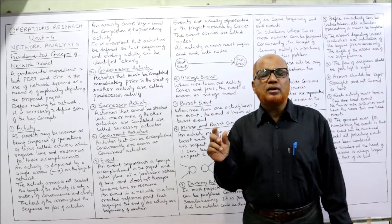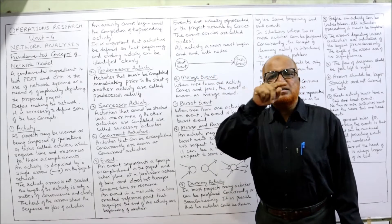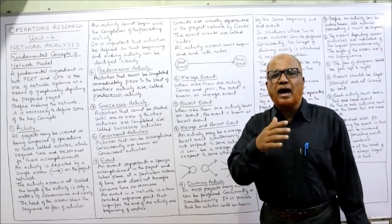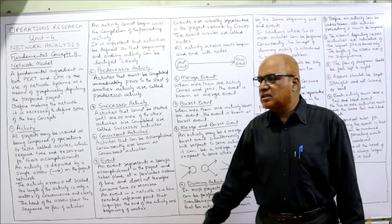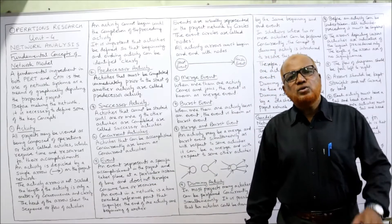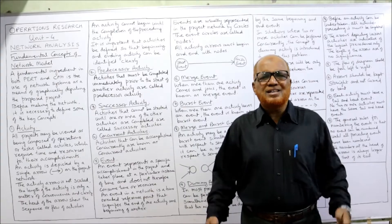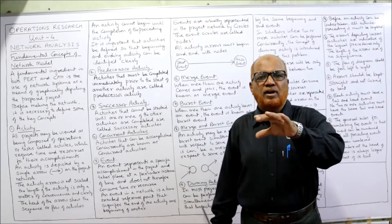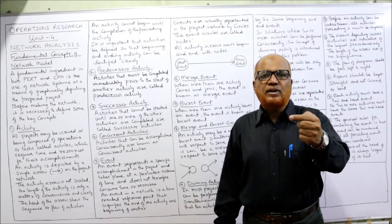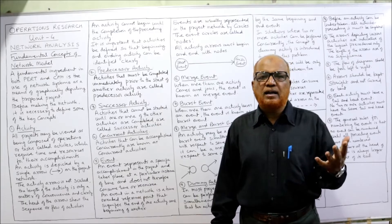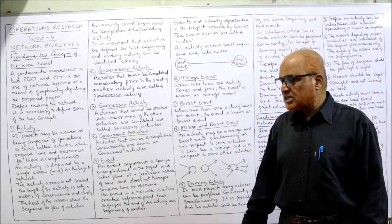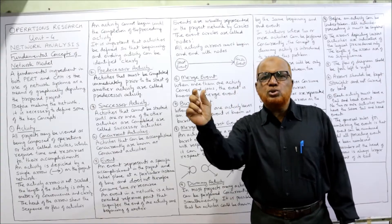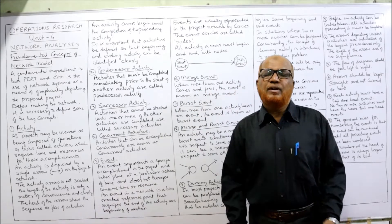An activity is depicted in the diagram by an arrow mark. In every network diagram you can see the arrow mark — head and tail of the arrow — that arrow mark shows the activity. Activities are represented by arrow marks in the network. The activity arrow is not scaled; the length of the arrow does not have any significance. It depends on your convenience and clarity. The head of the arrow shows the sequence and flow of activity.